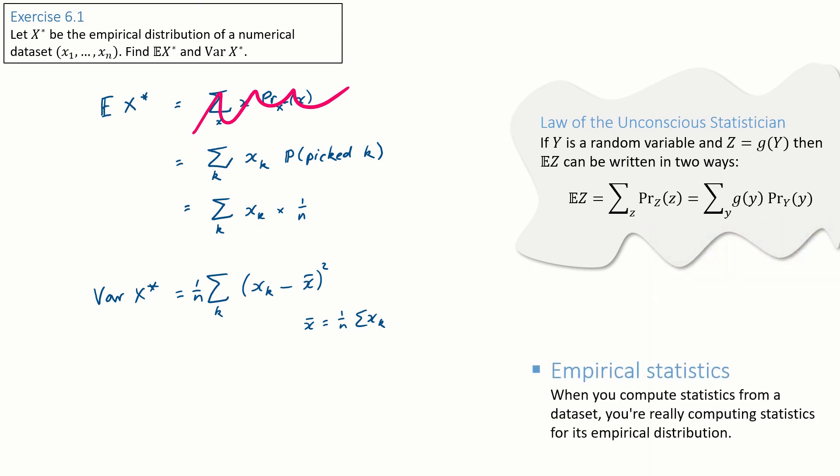Let me rephrase this. If you're given a dataset and someone asks you to compute its variance, you should, technically speaking, say, hey, that's a stupid thing to ask. Variance is something that's only defined for random variables. There's no such thing as the variance of a list. Or you could say, oh, you mean the variance of the empirical distribution of the dataset, and then everyone's happy. So whenever you're computing statistics from a dataset, what you're really doing is computing statistics for the empirical distribution.